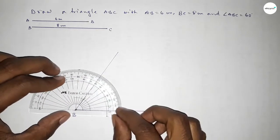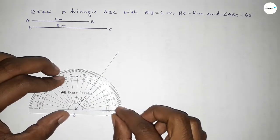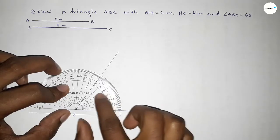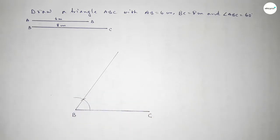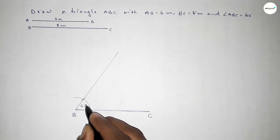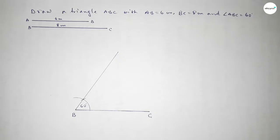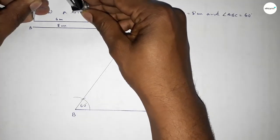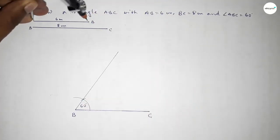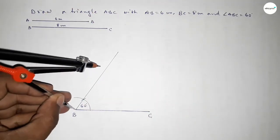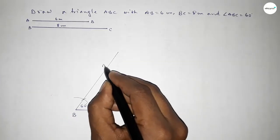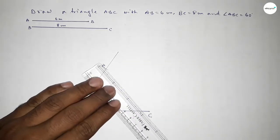This is 60 degree angle — checking whether it is 60 or not — yes, this is perfectly 60 degree angle. Now taking the length AB equal to 6 centimeter by using the compass and putting the compass on the point and cutting here, so taking here point A.